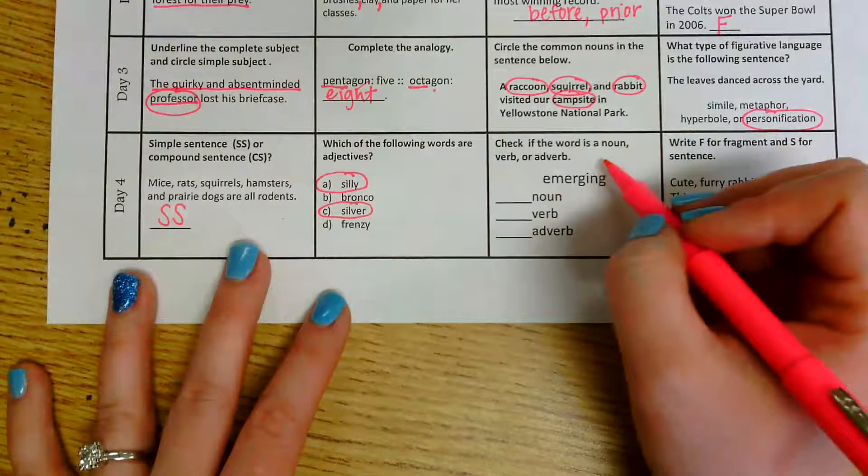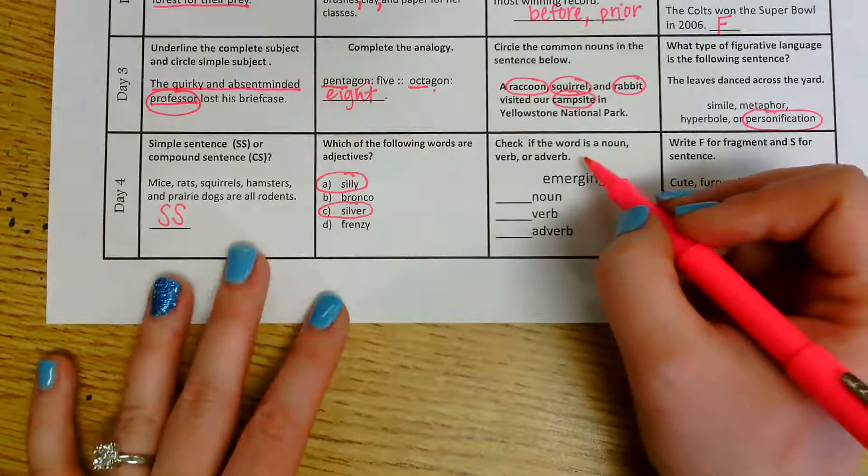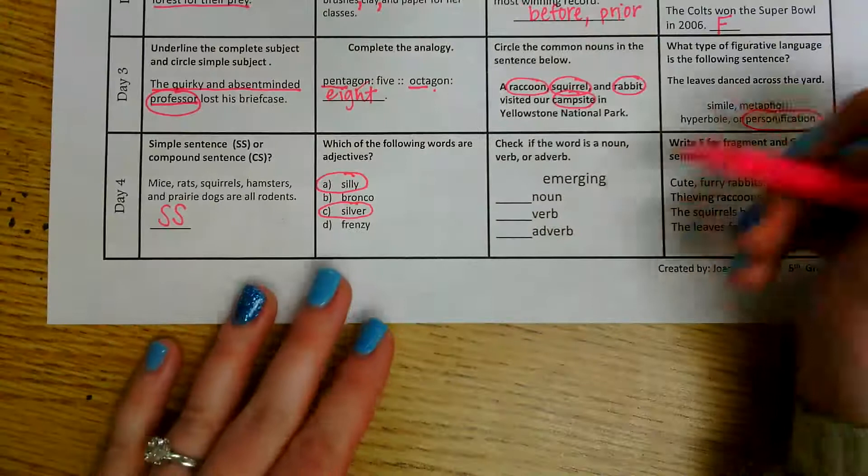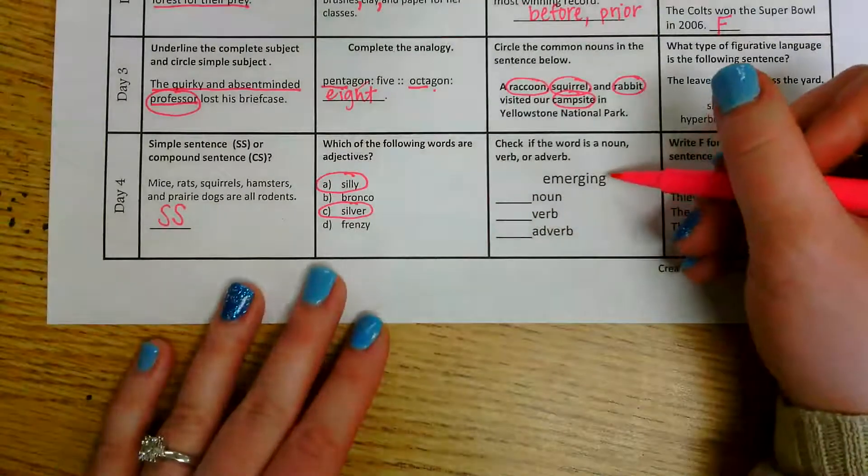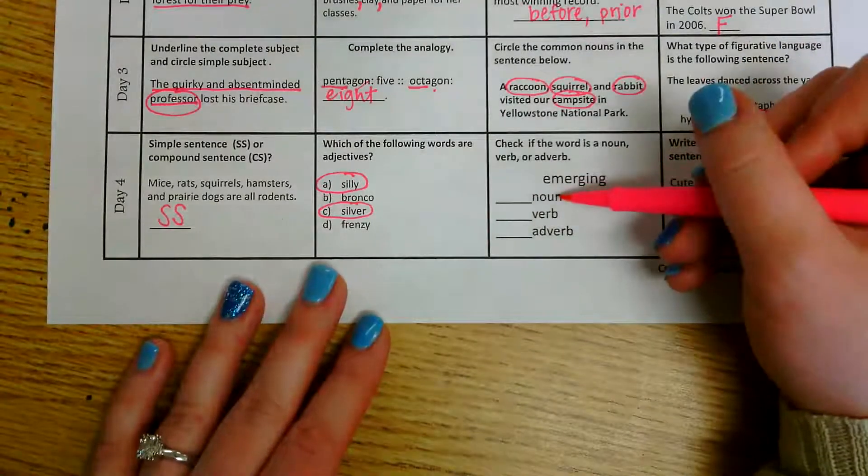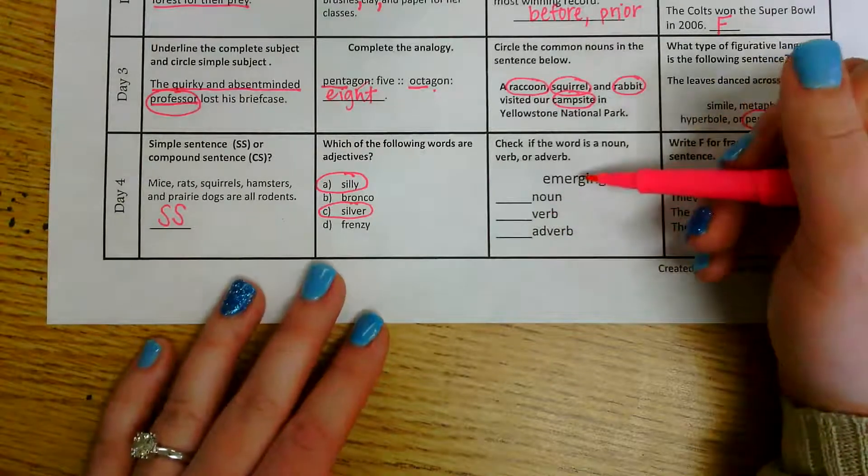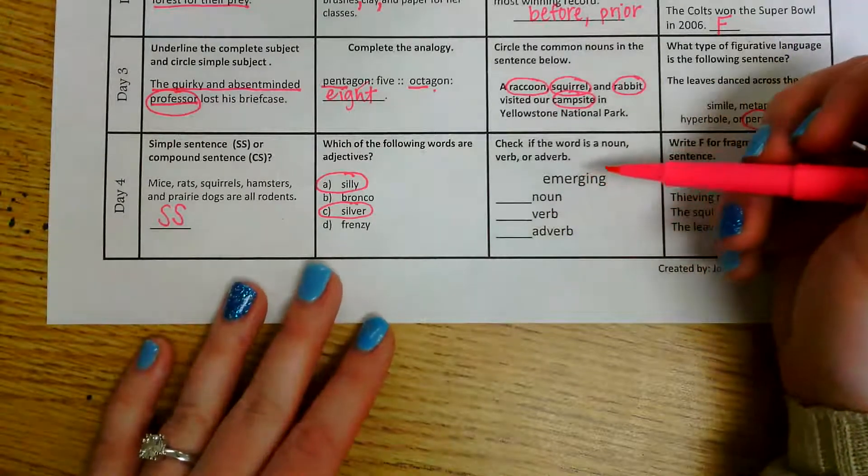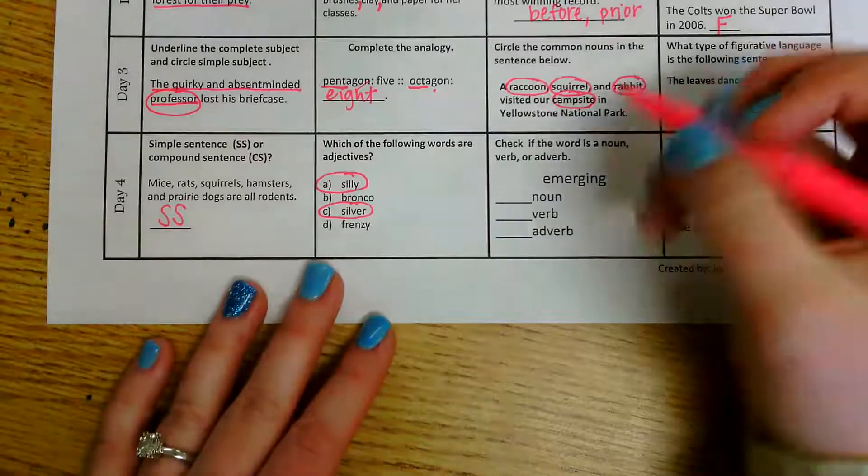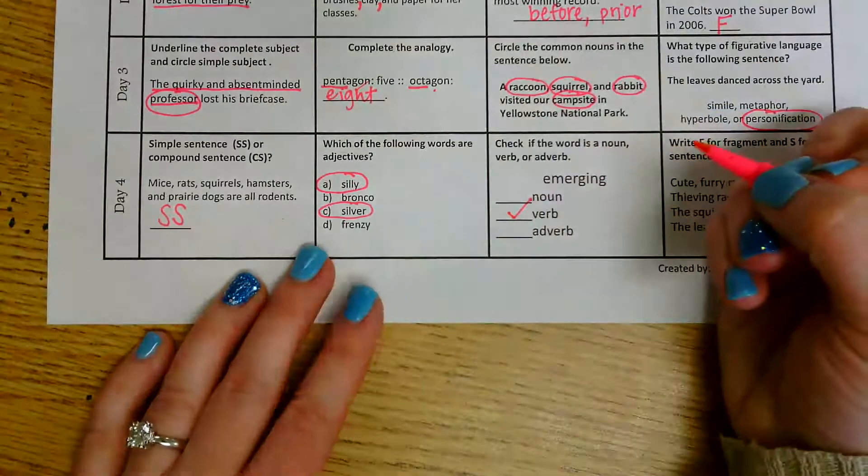The next one, check if the word is a noun, verb, or adverb. Okay, so I have the word emerging. So I'm choosing between noun, verb, or adverb. I know that emerging is an action that could take place. So I know that an action would be a verb.